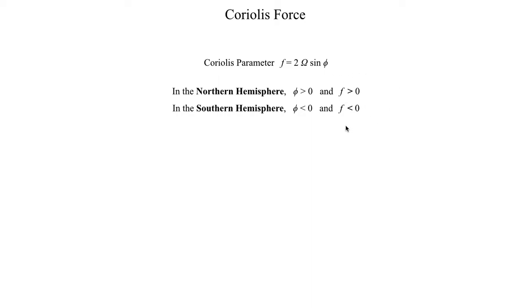So the main takeaway message is in the northern hemisphere, your Coriolis parameter should be positive. In the southern hemisphere, your Coriolis parameter f should be negative. And then at the equator, the Coriolis parameter should be zero, because sine of zero degrees is just zero.